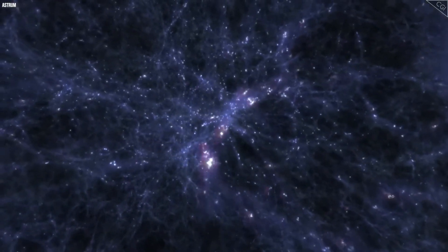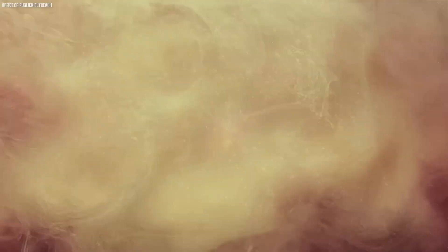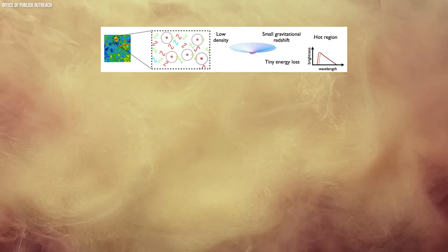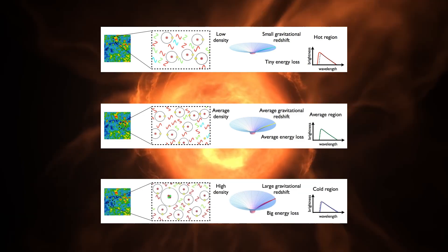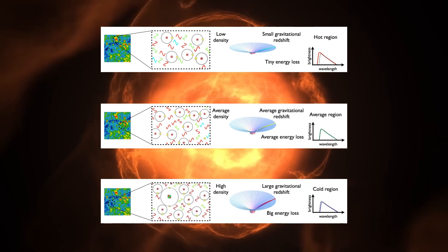Because these temperature differences were the seeds of future cosmic structures. They determined where matter would clump together under gravity's influence. In regions where it was slightly hotter, there was a bit more matter, leading to stronger gravitational pull. Conversely, in cooler regions, there was less matter and weaker gravity.